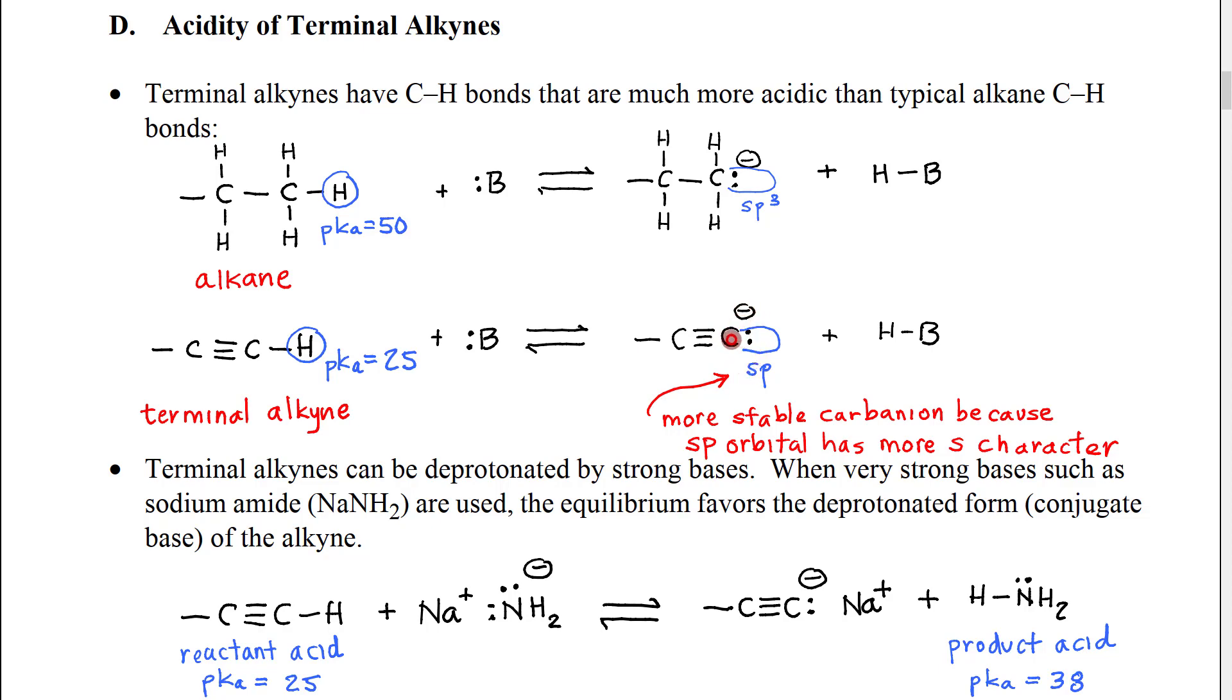And as we already mentioned, the alkyne carbons are sp hybridized, so this lone pair would be in an sp hybridized orbital. What we see then is that this alkyne, this acetylide ion, is more stable than the corresponding negative ion, carbanion, that we get from an alkane.